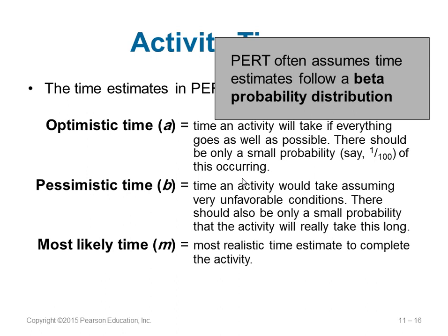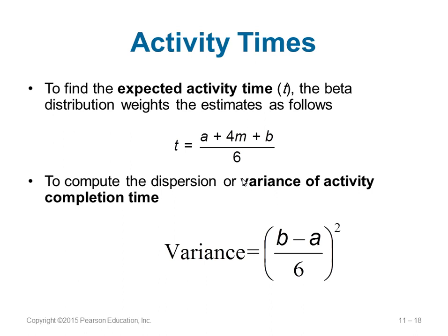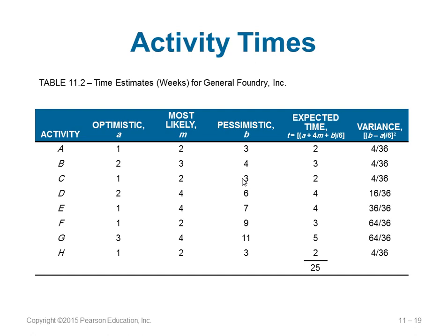PERT assumes what is called a Beta probability distribution. The expected activity time t is calculated as: t = (a + 4m + b) / 6. The variance of an activity is: variance = ((b − a) / 6)². Given a, m, and b for each activity, you calculate t and variance. Summing all the t values gives 25, meaning the project can be finished in 25 time units — here, 25 weeks — though this does not count parallel activities.